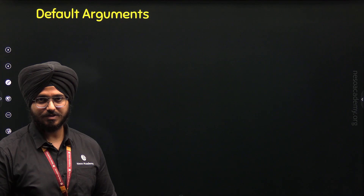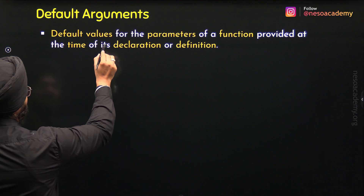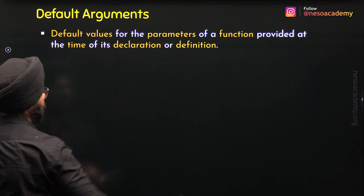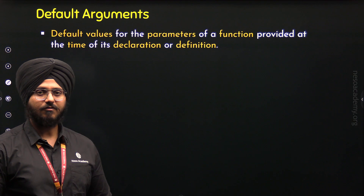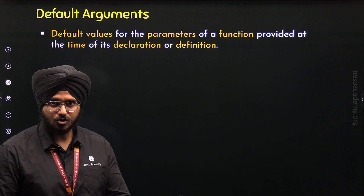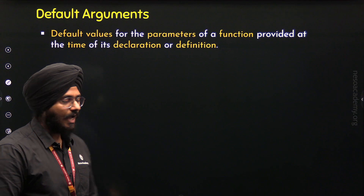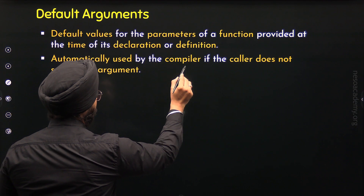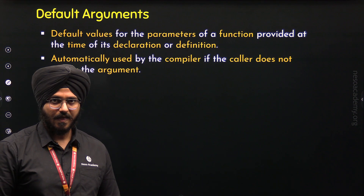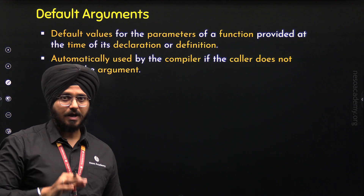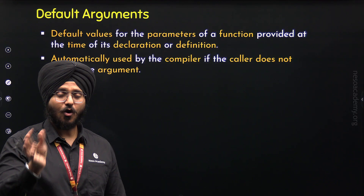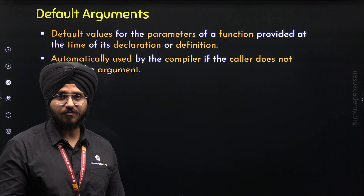So what are default arguments? Default arguments are default values for the parameters of a function provided at the time of its declaration or definition. These arguments are automatically used by the compiler if the caller does not supply the arguments. If we call the function without passing arguments to the parameters which have default arguments, then the compiler will automatically assign those default arguments.